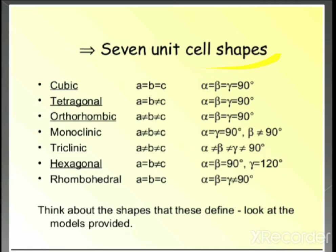The seven unit cell shapes possible are: cubic, tetragonal, rhombohedral, orthorhombic, monoclinic, triclinic, and hexagonal. In the cubic crystal lattice, all three angles — alpha, beta, and gamma — are equal to 90 degrees, and all edge lengths a, b, and c are equal.